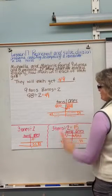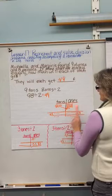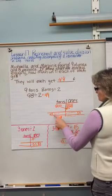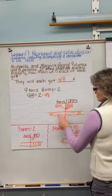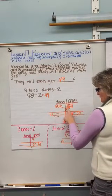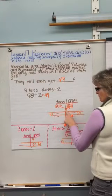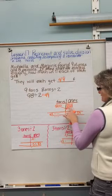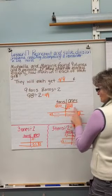I filled in my place value chart with 98, nine tens, eight ones. I was able to put them into groups of two. I had one left over, so I had to decompose it or unbundle it into the ones. I knew that I had eight ones, so I had to add ten more, so I had eighteen total.